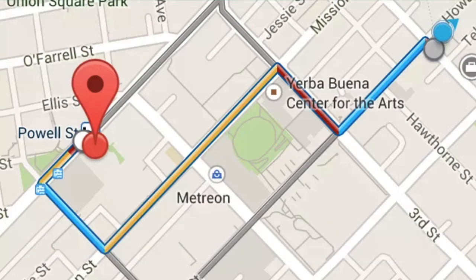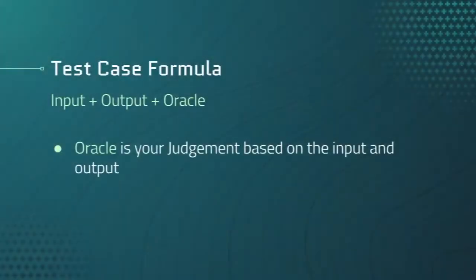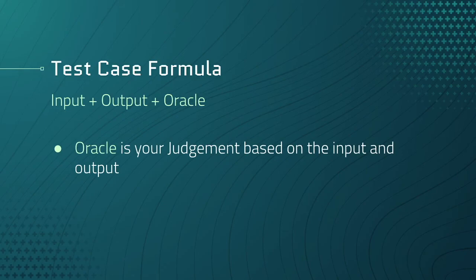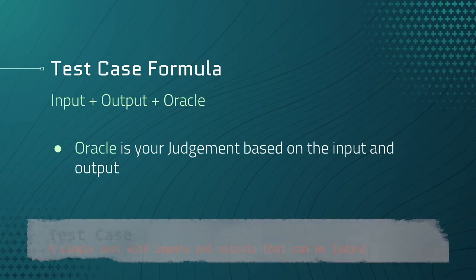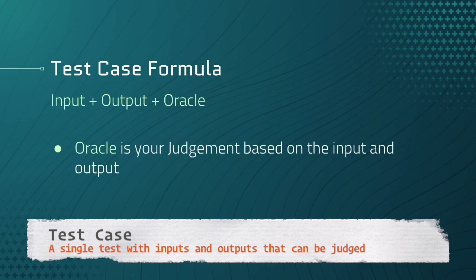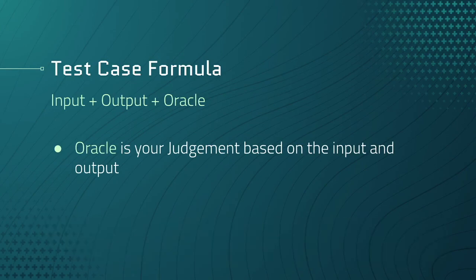Test cases are used to answer our questions, prove our theories, and also test the behaviors and outcomes of our code. The formula for a test case is input plus output plus oracle, where oracle is your judgment based on the inputs and outputs. Put simply, a test case is a single test with inputs and outputs that can then be judged. Let's explore this concept with code.